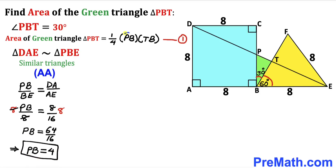So we have found that PB = 4 units. Now our next task is to find the value of TB.